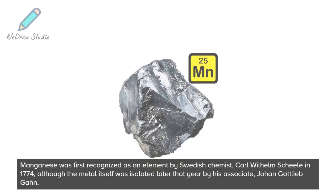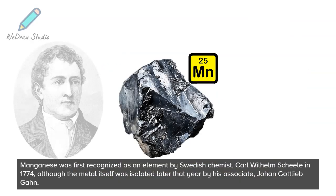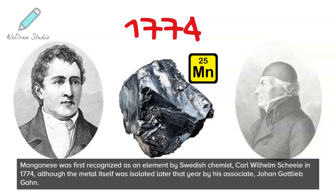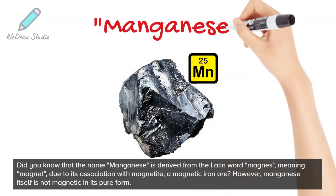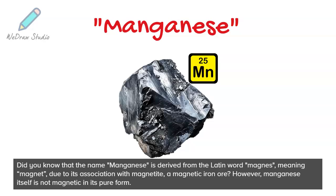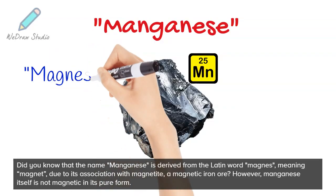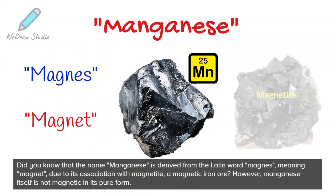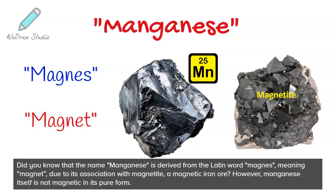Manganese was first recognized as an element by Swedish chemist Carl Wilhelm Scheele in 1774, although the metal itself was isolated later that year by his associate Johann Gottlieb Gan. Did you know that the name manganese is derived from the Latin word magnus, meaning magnet, due to its association with magnetite, a magnetic iron ore?